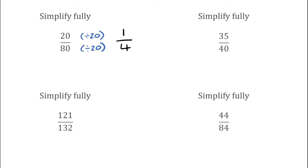For our next one we've got 35 over 40. The highest common factor of 35 and 40 is 5. So we're going to divide the numerator by 5 and the denominator by 5. 35 divided by 5 gives us 7 and 40 divided by 5 gives us 8. So our final answer for this one would be 7 over 8.